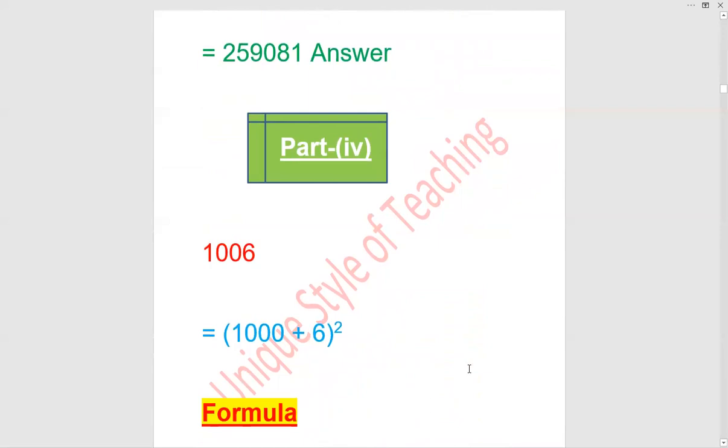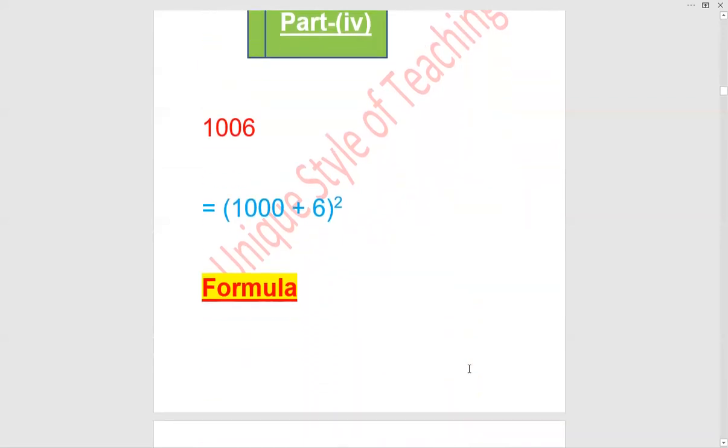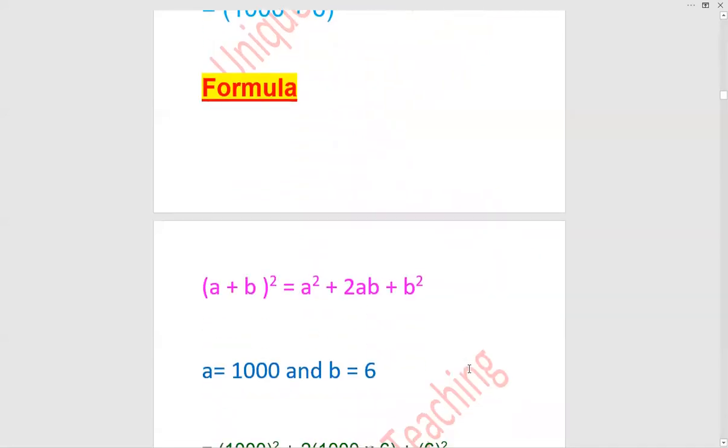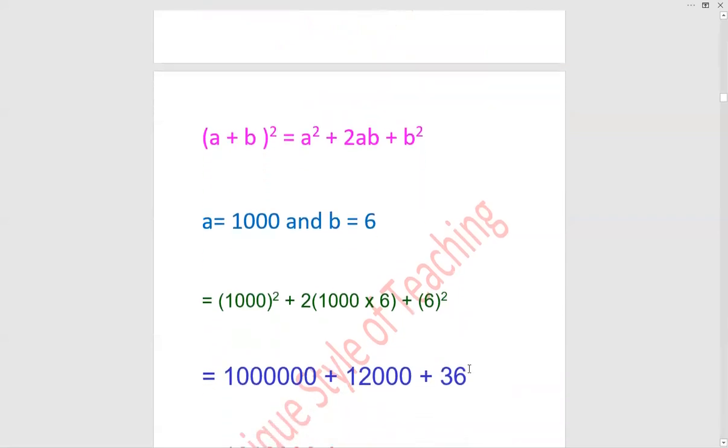Next number is 1006. This can be written as 1000 plus 6 whole square. The formula is (a + b)² = a² + 2ab + b². a value is 1000 and b value is 6. Plug the values: 1000² plus 2 × 1000 × 6 plus 6².